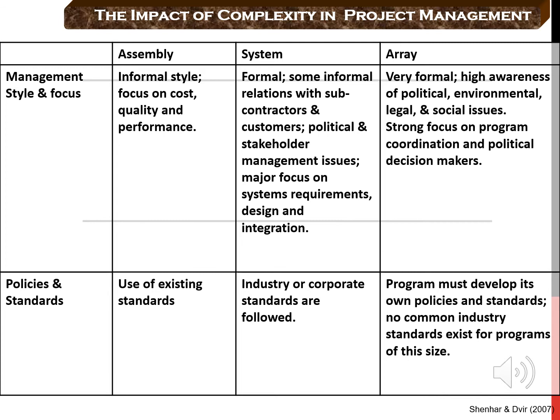In system projects, the management style needs to be more rigid and formal. Because system projects require integration of the final product, project managers need to adapt project management tools for controlling and coordination of all different components. For example, the use of earned value reports combines budget with actual work done in the project. In array projects, a high level of formalization is needed, since the dispersed nature of the final product and the extent of subcontractors make it necessary to manage the whole program in a very formal way.